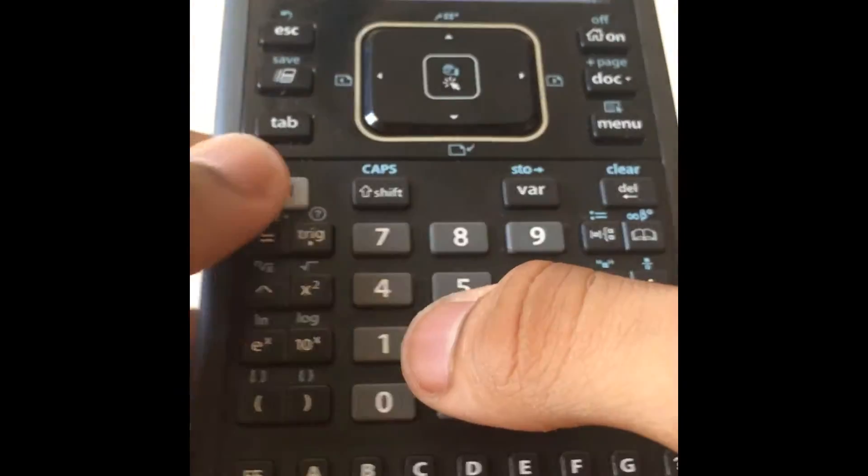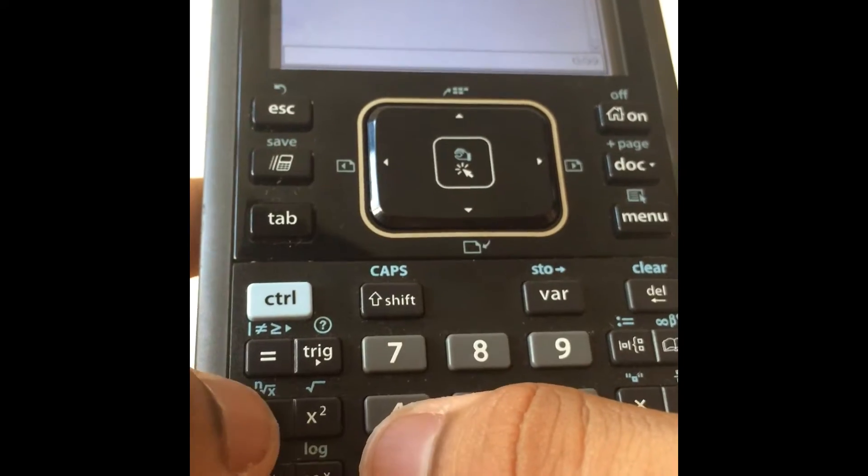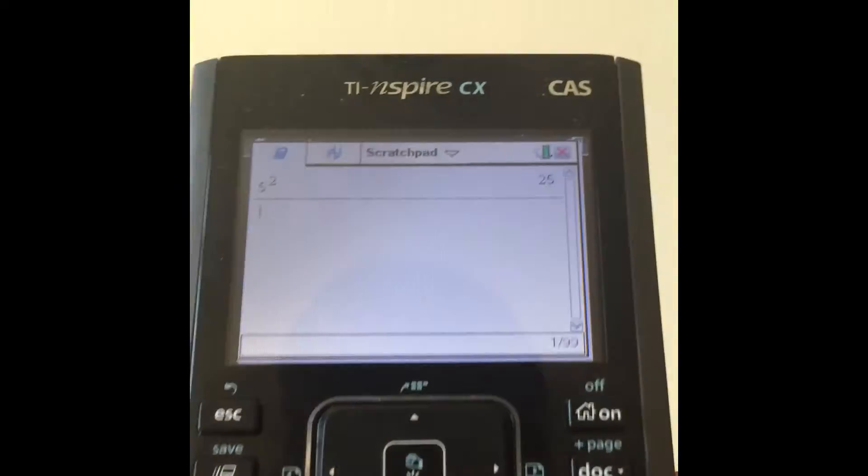To use square roots, press ctrl followed by the x square button over here. If you want to do the nth root instead, ctrl plus this button. For exponentiation, use this button over here. For example, 5 to the power of 2 is 25.